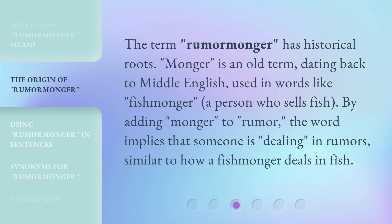The term 'rumormonger' has historical roots. 'Monger' is an old term dating back to Middle English, used in words like 'fishmonger,' a person who sells fish. By adding 'monger' to 'rumor,' the word implies that someone is dealing in rumors, similar to how a fishmonger deals in fish.